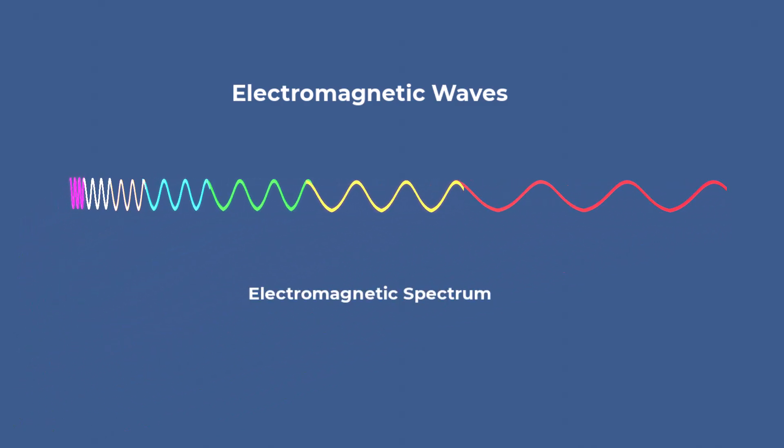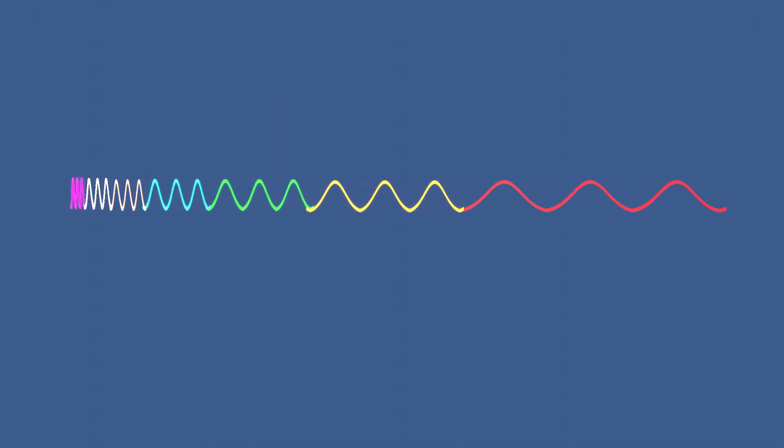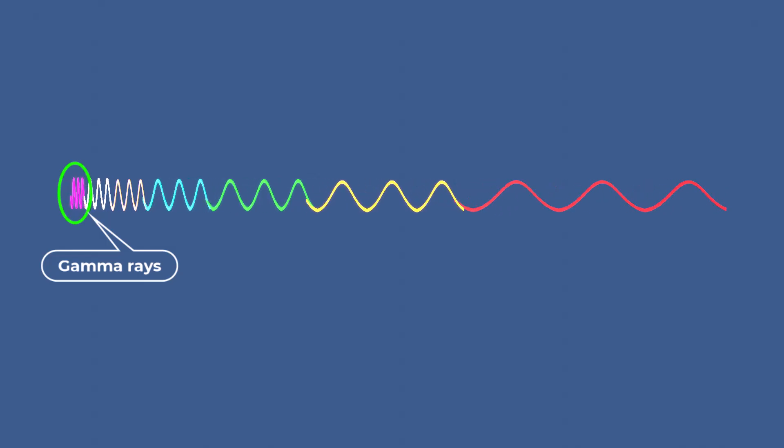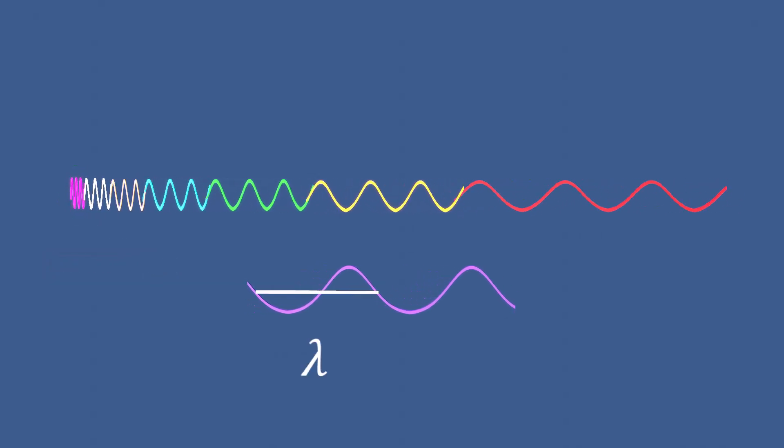The electromagnetic spectrum is the complete range of electromagnetic waves, from the longest radio waves to the shortest gamma rays, arranged according to their wavelength and frequency.